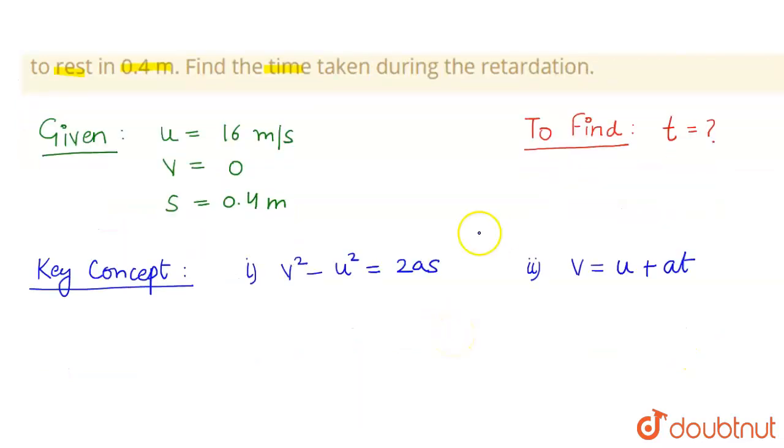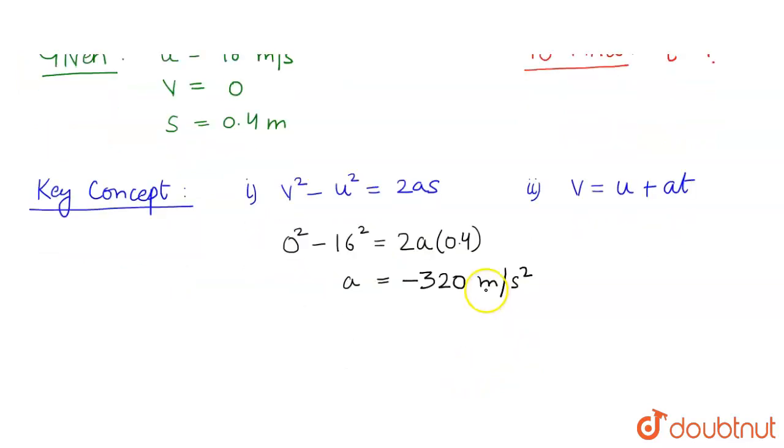So now we can proceed to solve this question. We'll start with the first equation, which is v² - u². So v in our case is 0, so 0² - 16² = 2 times a times s is 0.4. So now on solving for a we will get -320 meters per second squared. So now we can proceed to find the time from equation number 2.